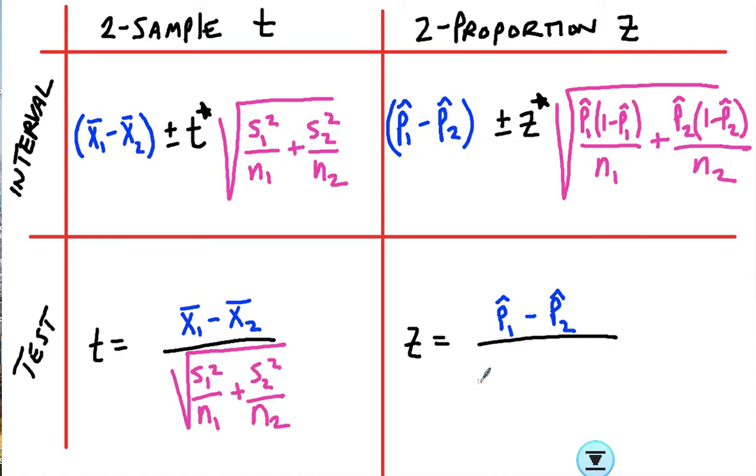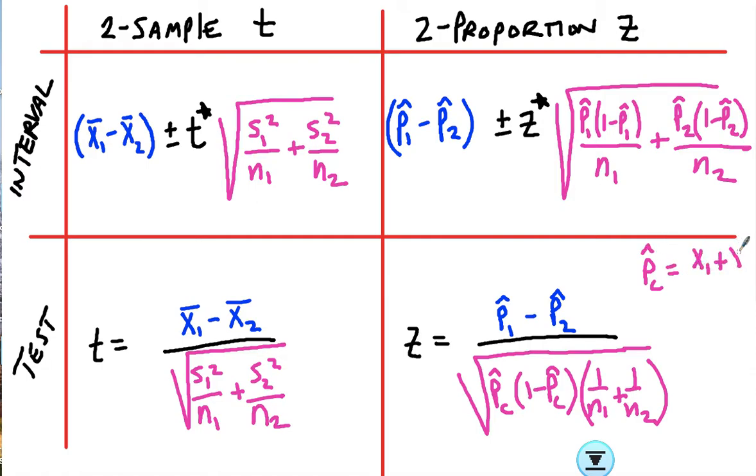Now, for your test, it's going to be a slightly different formula. It's very similar, but you use the combined p̂(1 - p̂)(1/n₁ + 1/n₂). And the combined p̂ is what you get when you take (x₁ + x₂)/(n₁ + n₂). And this is on your formula sheet as well.